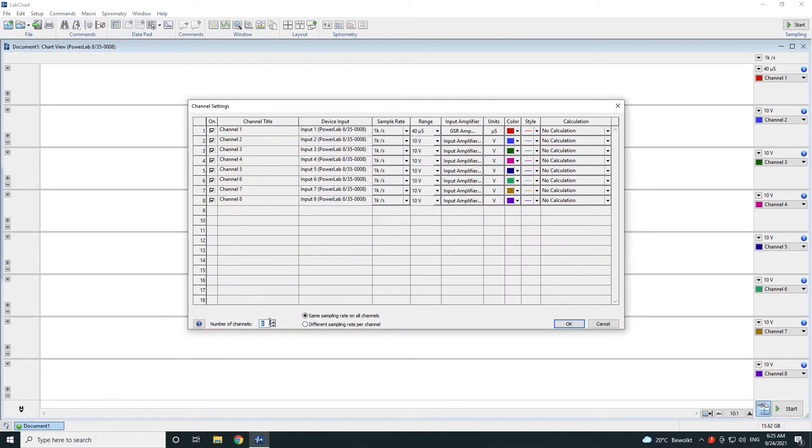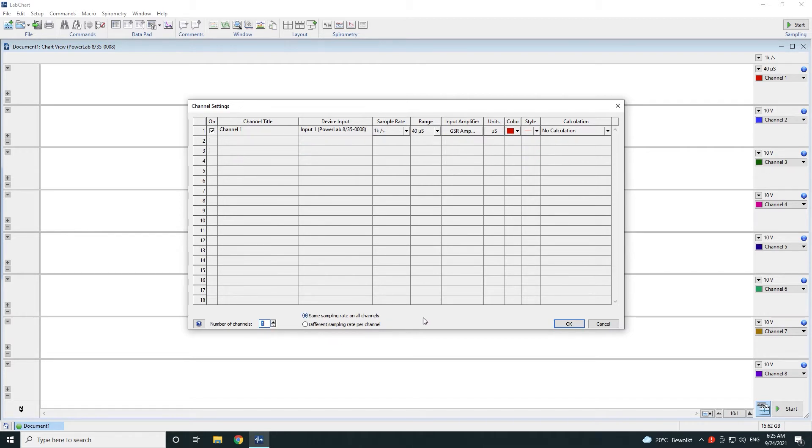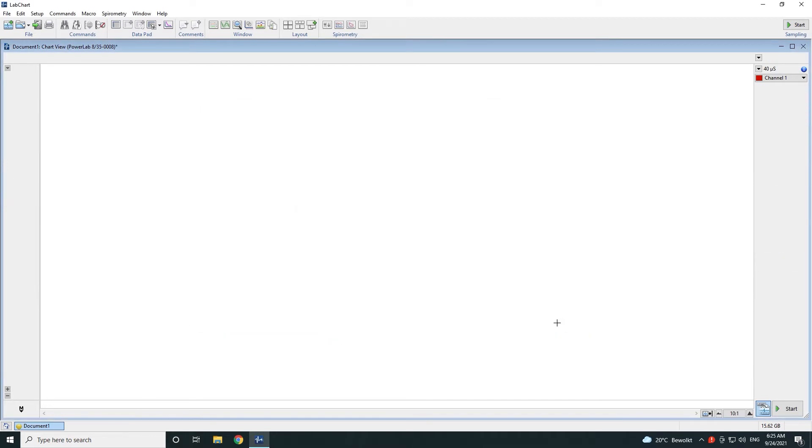Set the number of required channels and then click on the GSR amp in the drop-down list of the channel it's connected to.